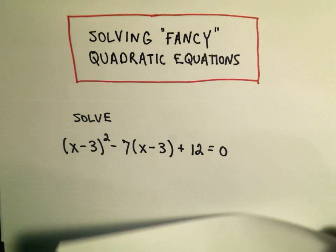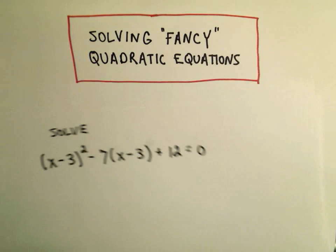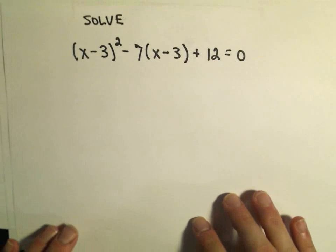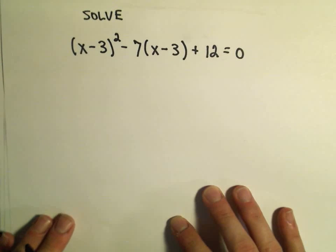There are a couple different ways you could go about doing this problem. You could first start by simply multiplying everything out, collecting like terms, and then either using the quadratic formula or trying to factor it.